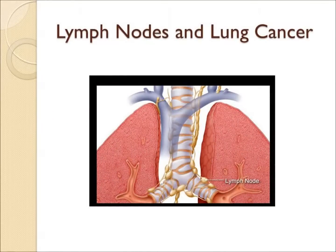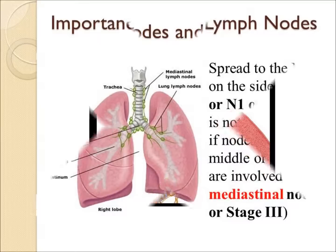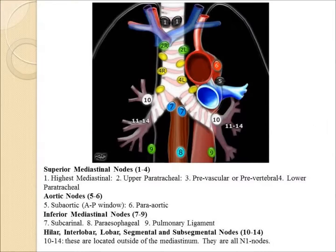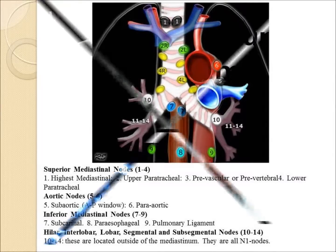More important are the lymph nodes in the chest. The lymph nodes on the side are called the hilum, or N1 nodes — this would be stage 2. Lymph nodes in the middle, or mediastinum, are called N2 and would make a patient stage 3. The lymph nodes are numbered and labeled, and there are diagrams that will clarify this.